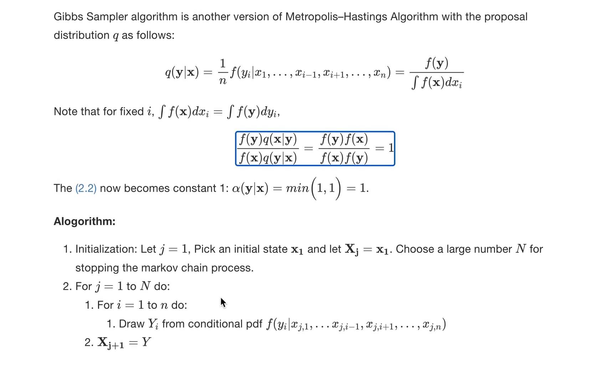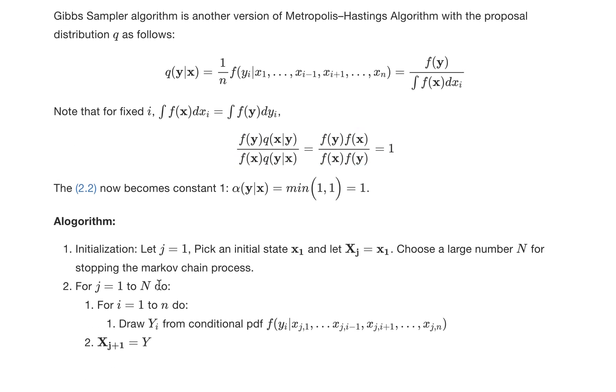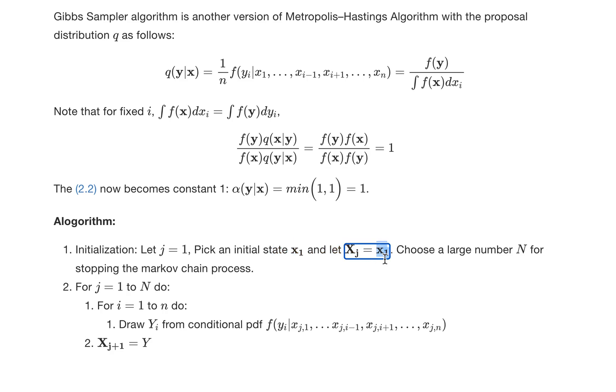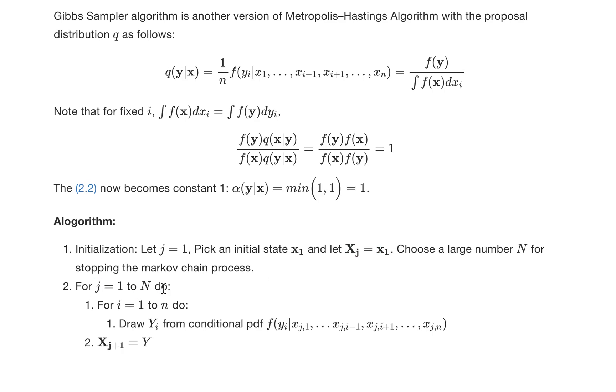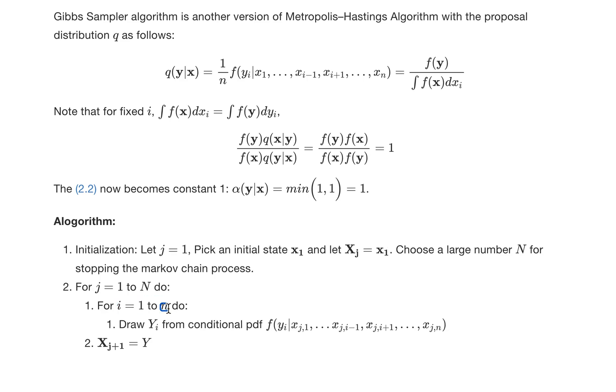That's the idea. The algorithm is simple: we first pick an initial sample x1 from our distribution, and then we're going to go through N steps for the same Markov process. We want N to be large.